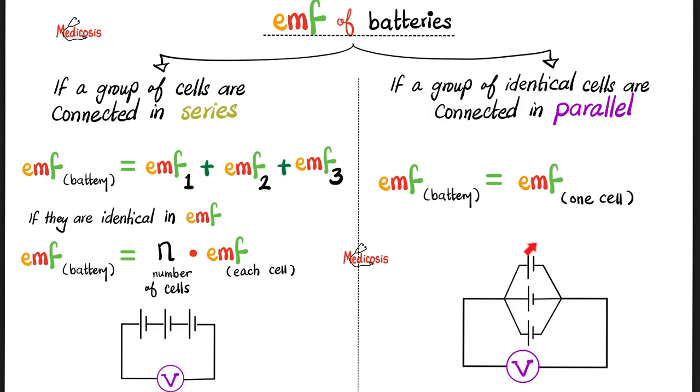Example, if this is 1.5 volts, 1.5 volts, and this cell is 1.5 volts, then the electromotive force for the entire battery is 1.5 volts.